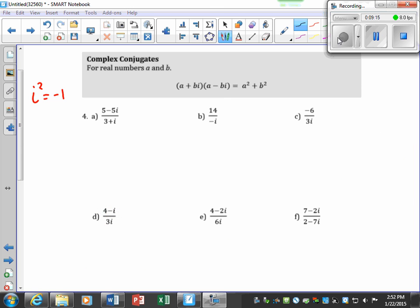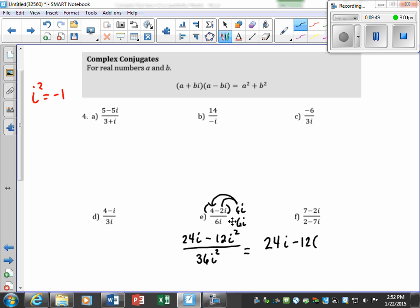Okay, for e, we're going to multiply by 6i, multiply by 6i. Of course, 6 times 4 is 24i, minus 6 times 2 is 12i squared. In the bottom, in the numerator, we'll get 6 times 6 is 36i squared, so that will be 24i minus 12 times our i squared is a negative 1 over 36 times i squared, which is negative 1.